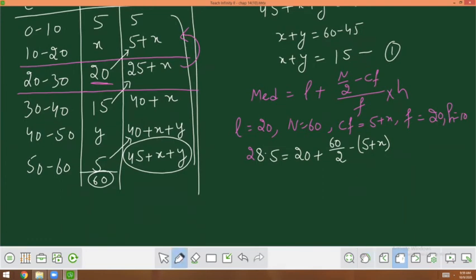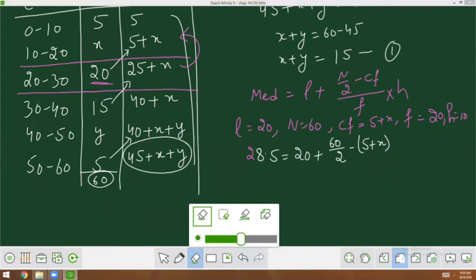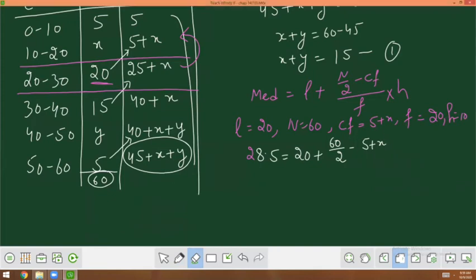This is where a lot of kids make mistakes. What is the mistake? If you don't open the bracket, then you will get the wrong answer. 5 is minus, x is plus. If you open the bracket, then both signs change. But if you don't open the bracket, the sign doesn't change. Then you go wrong. Firstly, use the bracket. Clear? F is 20 and h is 10.